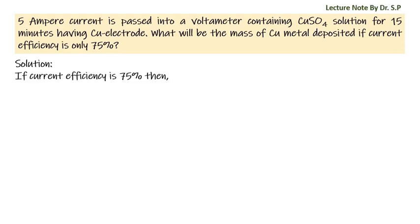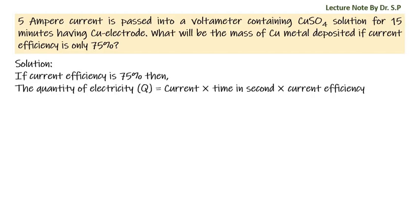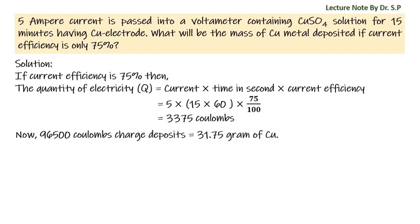If current efficiency is 75 percent only, then the quantity of electricity Q is equal to current into time in seconds into current efficiency — that is 5 into 15 into 60 into 75 by 100 — that is 3375 coulombs. Now, 96500 coulombs of charge deposits 31.75 grams of copper.